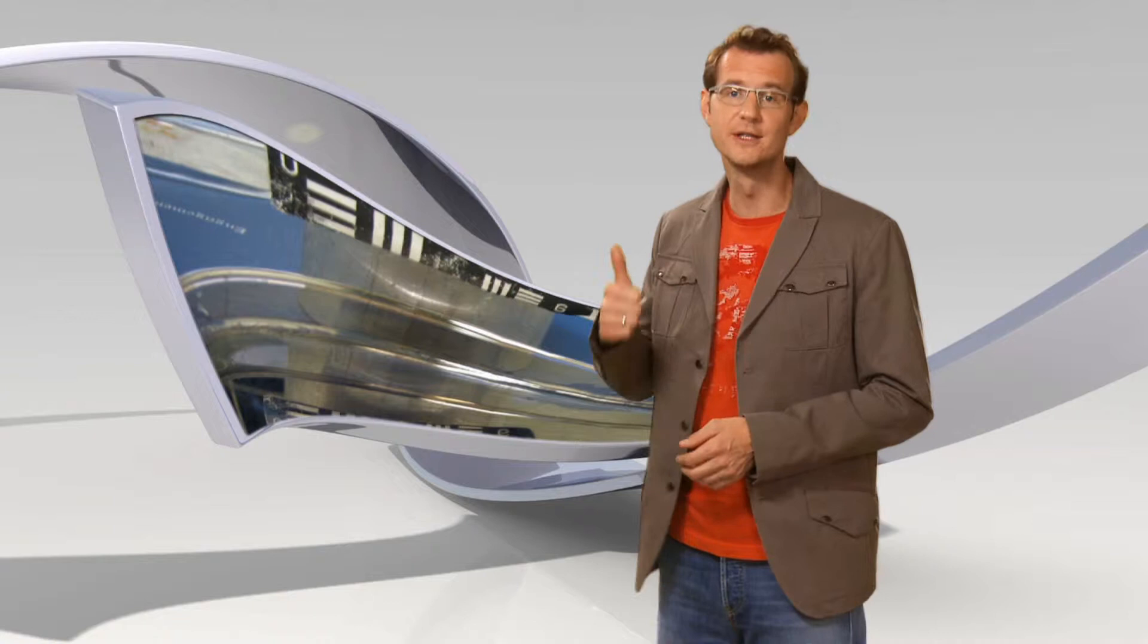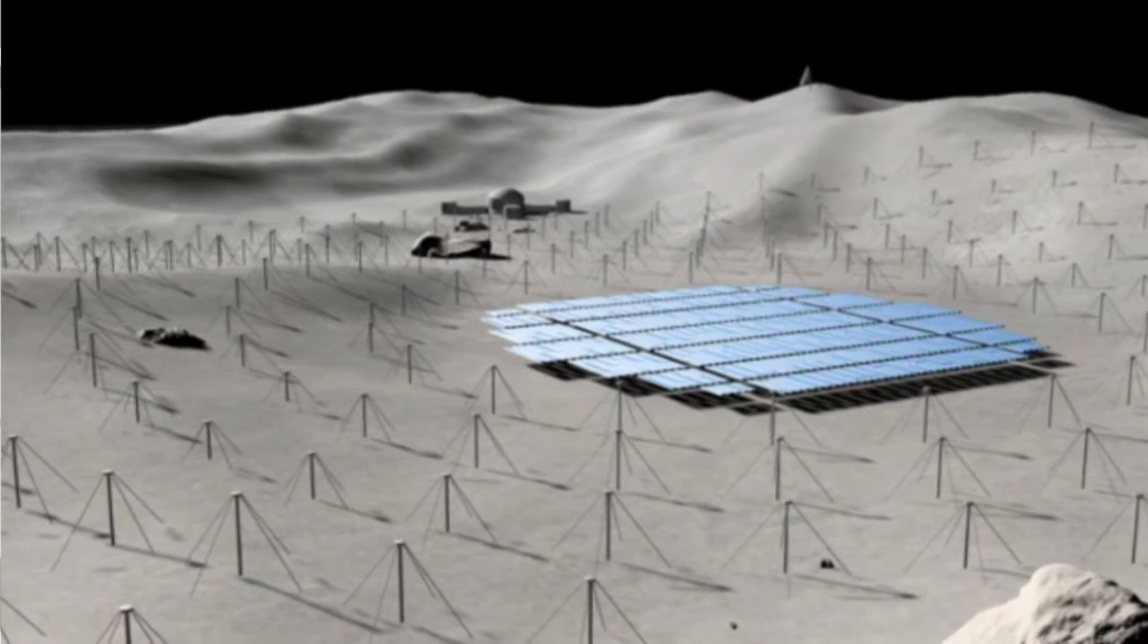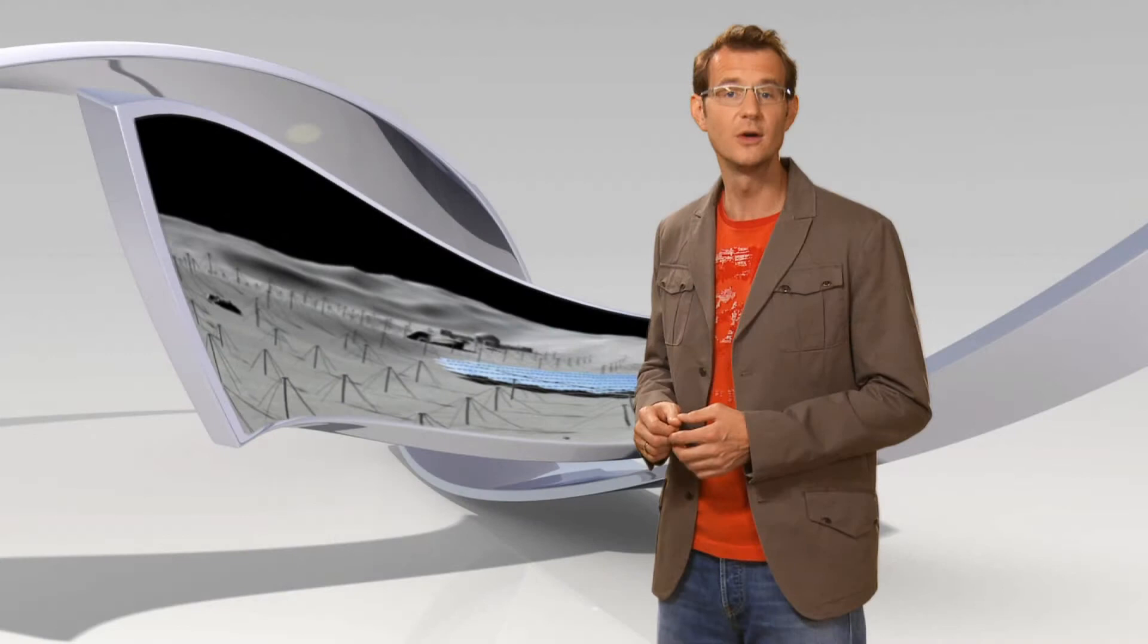Radio astronomers want to put a LOFAR-like array of small antennas onto the surface of the Moon, as far away as possible from terrestrial sources of interference. Who knows, one day there might even be a big optical telescope on the far side of the Moon.